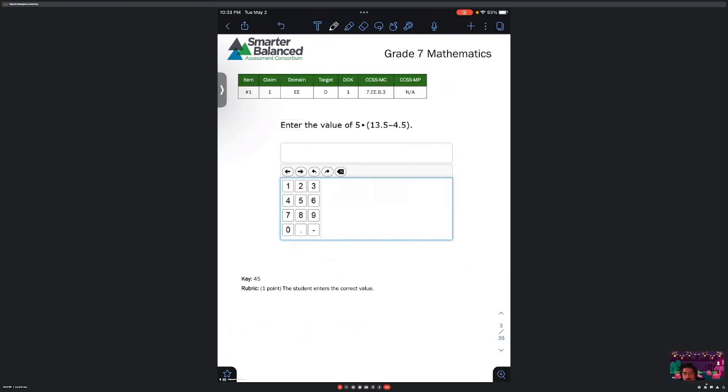All right, so for the first one it says enter the value of 5 times (13.5 minus 4.5). So how do we do this problem? There's two ways. The first...